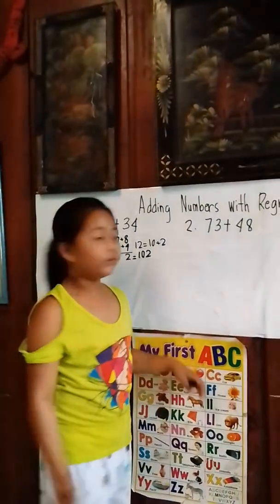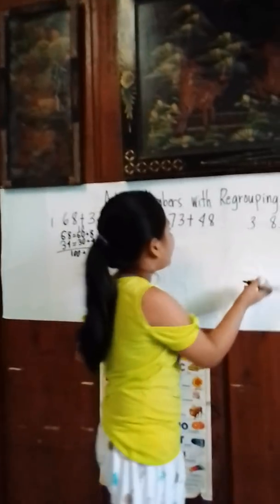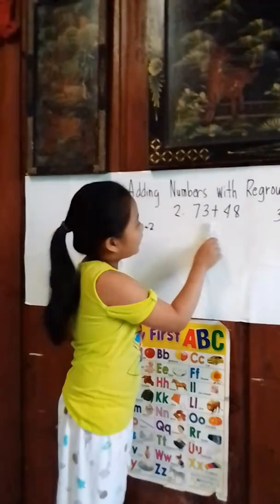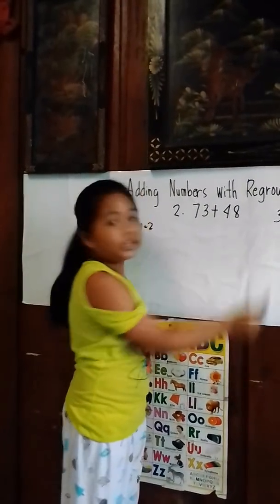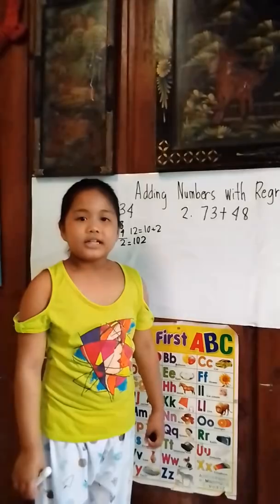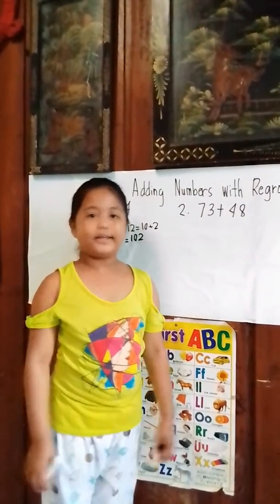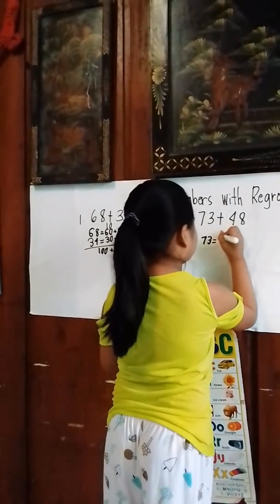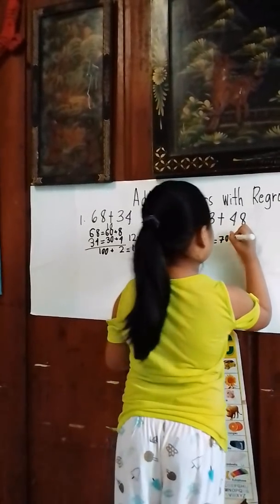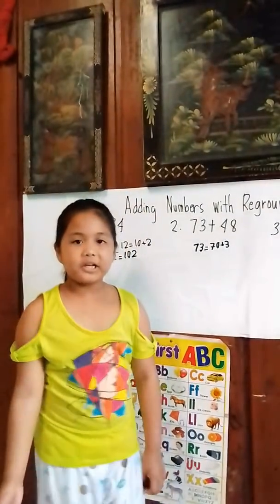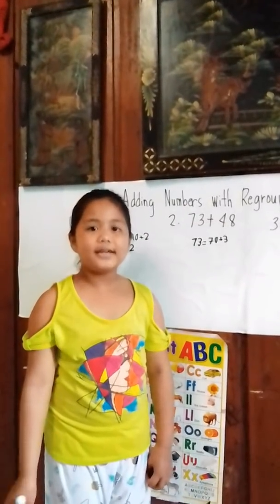Number two: 73 plus 48. What is the regrouping of 73 plus 48? The regrouping of 73 is 70 plus 3. The regrouping of 48 is 40 plus 8.